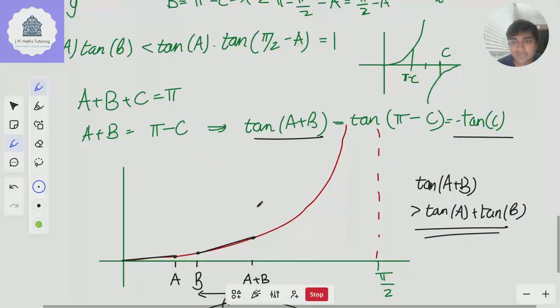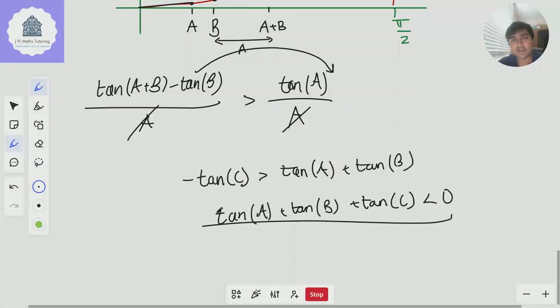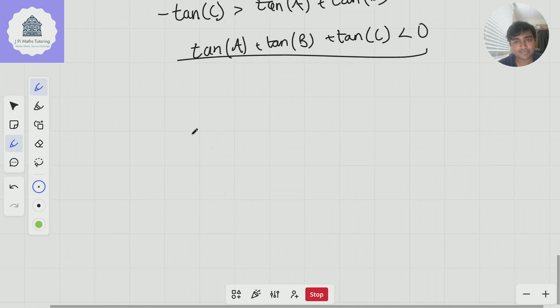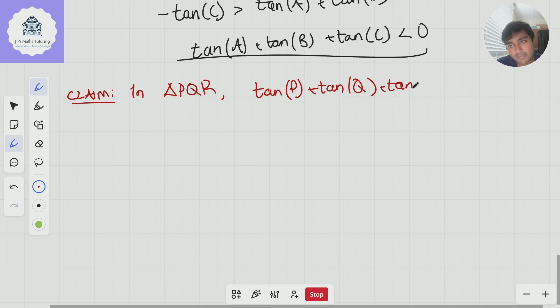So that's the way that maybe they would have expected you to solve this because I didn't use the compound angle formula. But if you use the compound angle formula, you can deduce something really beautiful. So this is a really useful result. So claim in triangle PQR: tan(P) + tan(Q) + tan(R) = tan(P) tan(Q) tan(R). Really nice result.